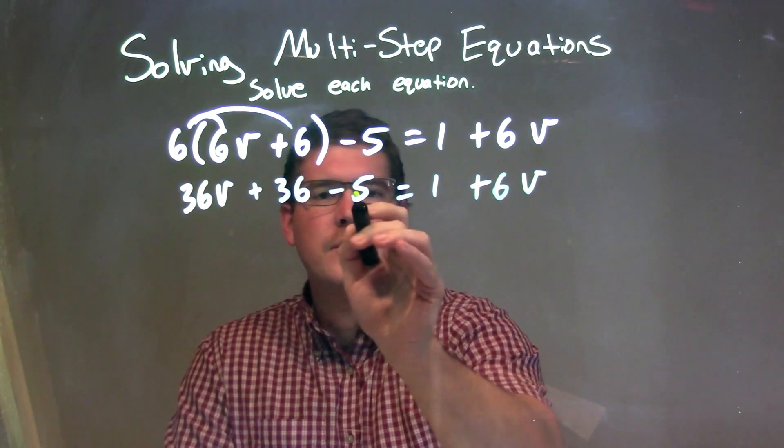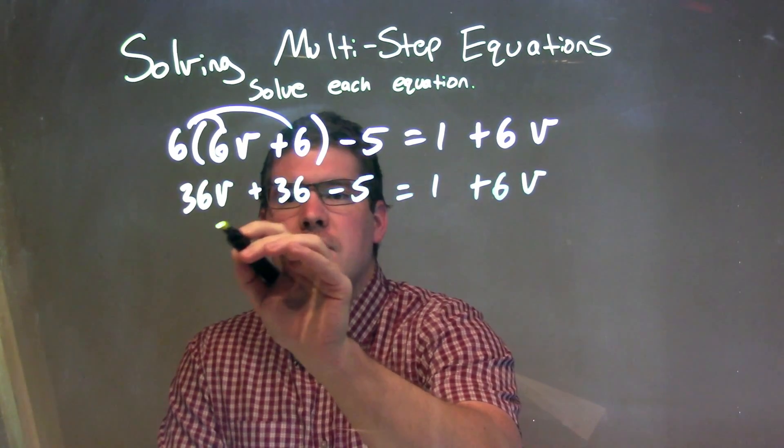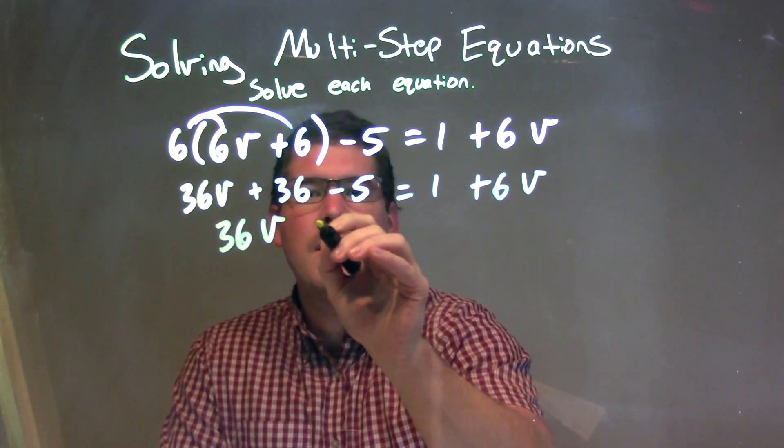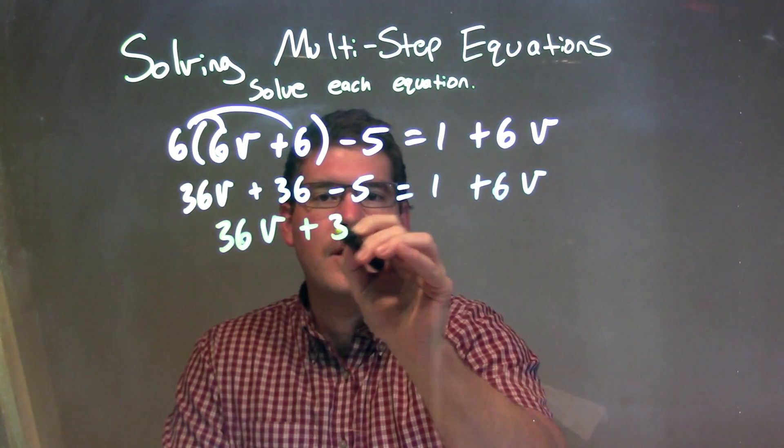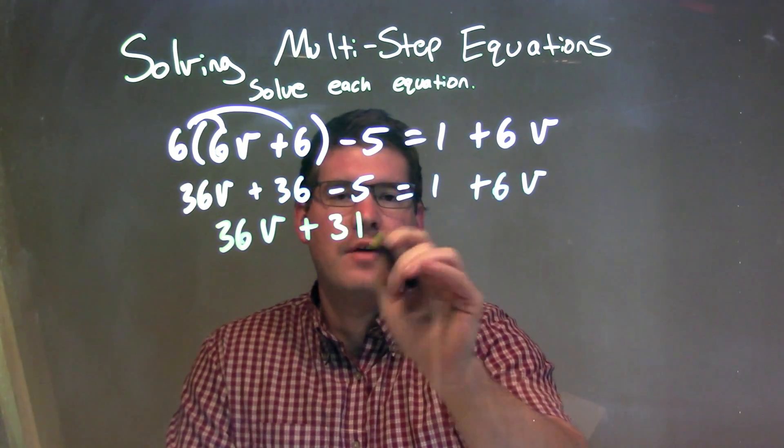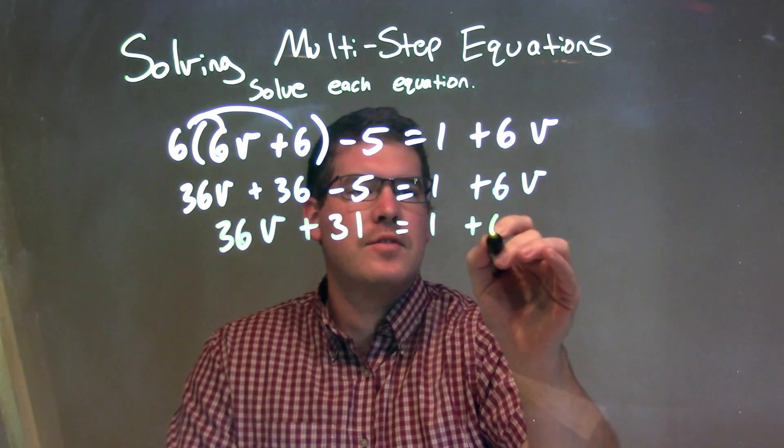So, now I can still simplify. 36 minus 5 is 31, so we have 36V plus 31. 36 minus 5 is 31, equals 1 plus 6V.